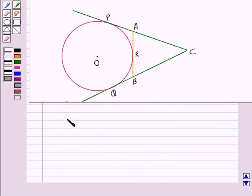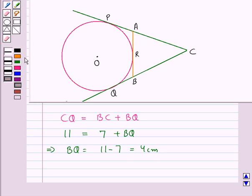Now from the figure you can see that CQ is equal to BC plus BQ. We have the length of CQ as 11 cm and the length of BC is given as 7 cm. So we substitute BC as 7 cm and CQ as 11 cm, and from here we get the value of BQ as 11 minus 7 cm, which is 4 cm. Therefore BQ is equal to 4 cm.